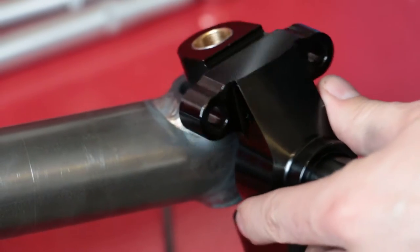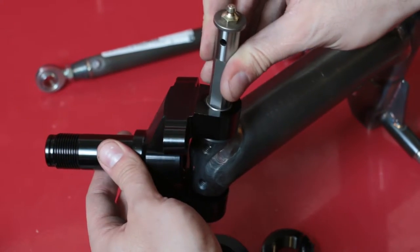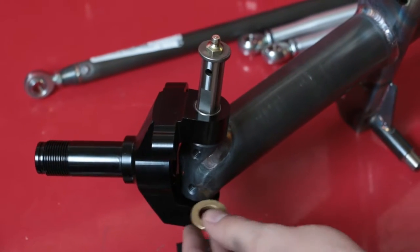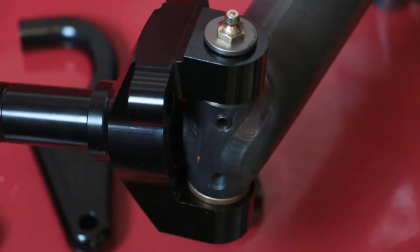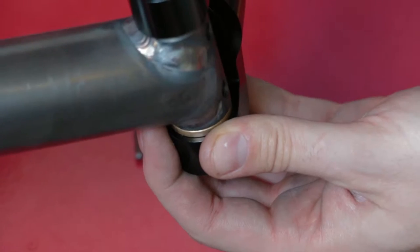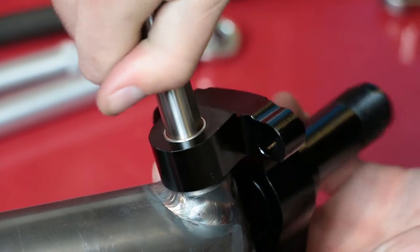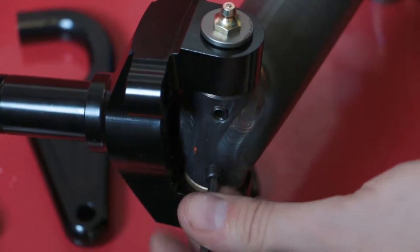Use your kingpin set to affix your spindles to the axle. Slide kingpin downward through the top of the spindle and into the kingpin boss on the axle. Add a bronze kingpin washer from the kingpin set between the bottom of the kingpin boss and the bottom of the spindle before pushing the kingpin all the way through. Make sure the flat on the kingpin faces the set screw holes and once installed insert set screws and tighten them securely.